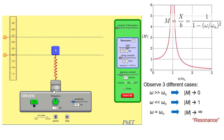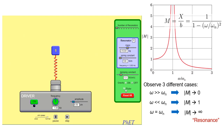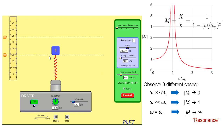Now let us play around with the real PhET app. Here we have the mass-spring system and the driver. I'll reset everything, turn the ruler on so we can see clearly, and set the damping constant to its minimum value of 0.05. Gravity is turned off, the natural frequency is set to 1 Hz, and the driver amplitude is set to 1 cm.